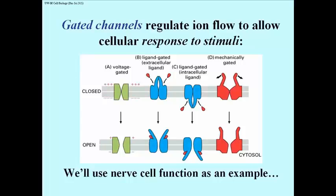Item B is ligand gated, so this could be the acetylcholine receptor of a muscle cell, for example, responding to acetylcholine released by a neuron that is innervating that muscle. The little upside down red teardrops might be acetylcholine binding to a receptor site, and the result is to open this channel to allow ions to flow and for a response in the muscle or next nerve cell.